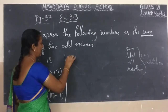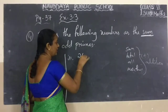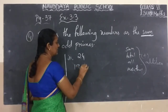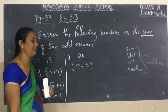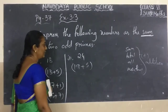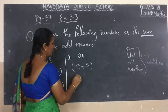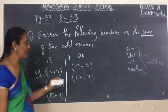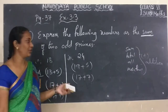Do you understand? Like this, we are having the second one. What is the second number? 24. How we can write 24? 19 plus 5 — we can write. 19 is a prime number, 5 is a prime number. Next: 17 plus 7. We can write — 17 is a prime number, 7 is a prime number. So when you are adding these two prime numbers, we are getting 24.